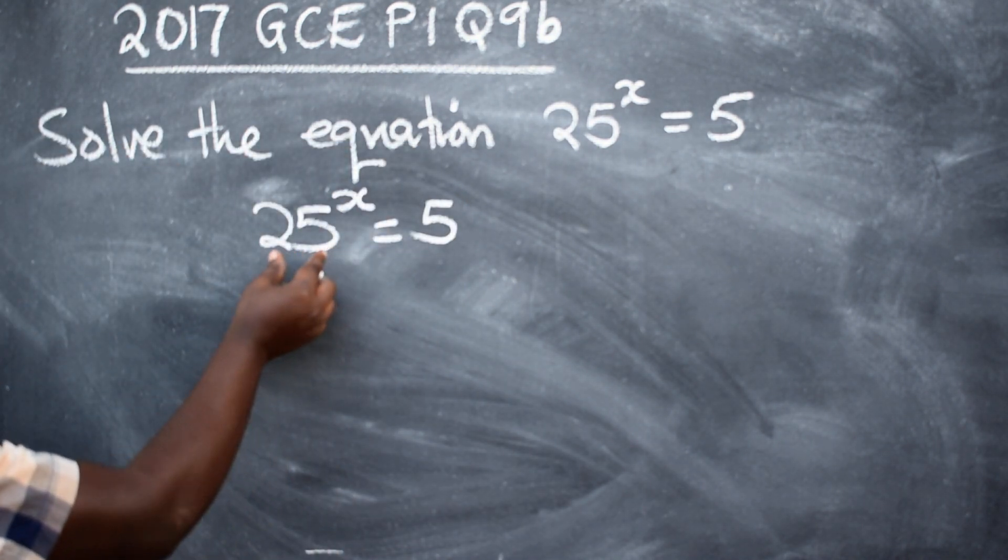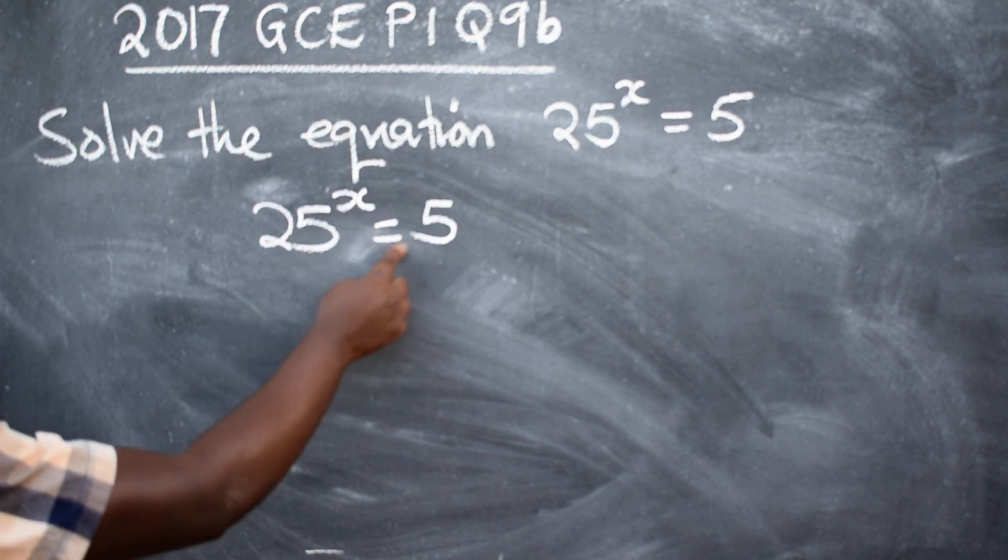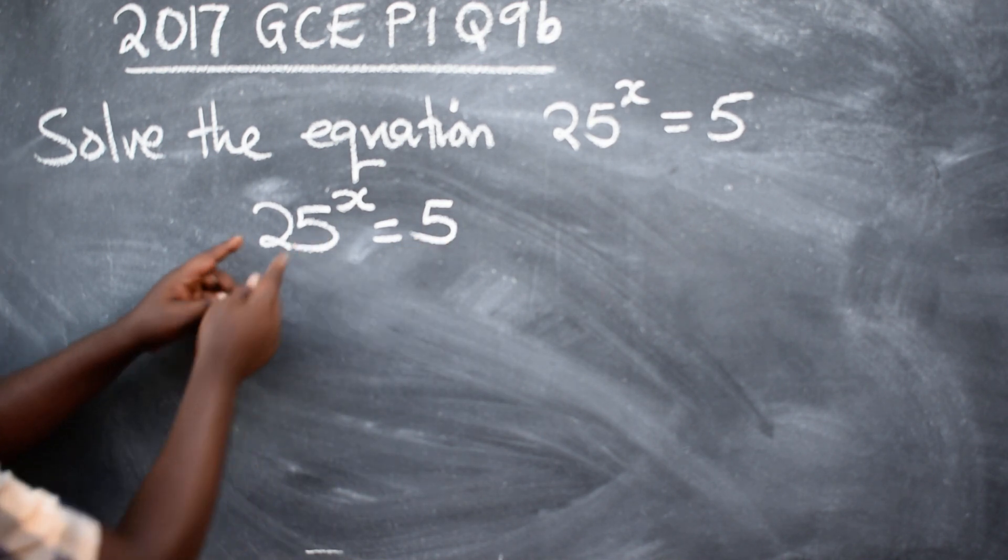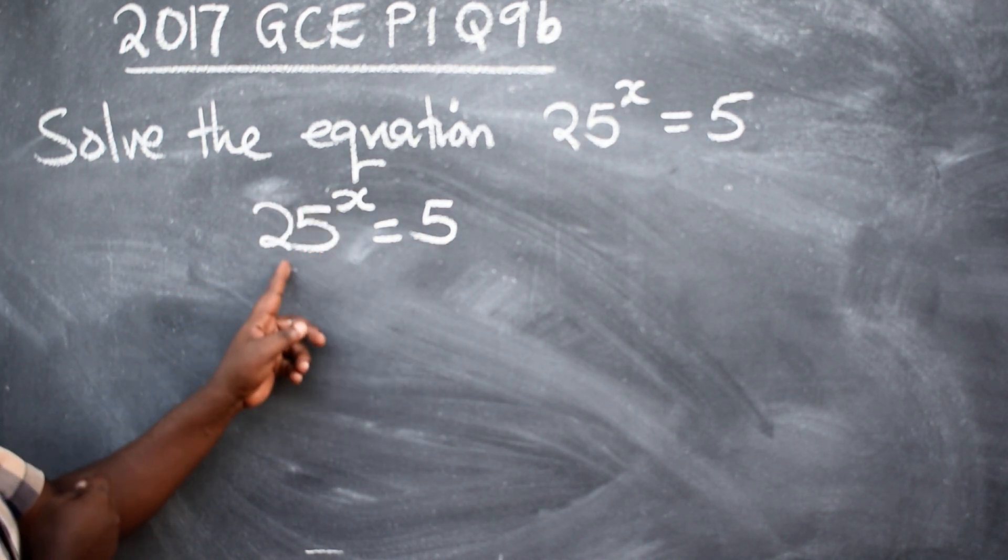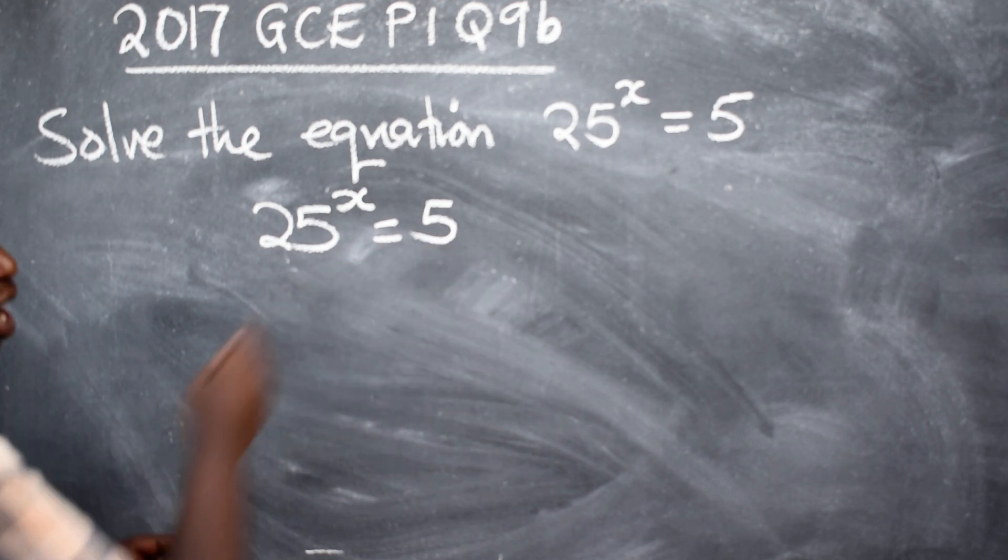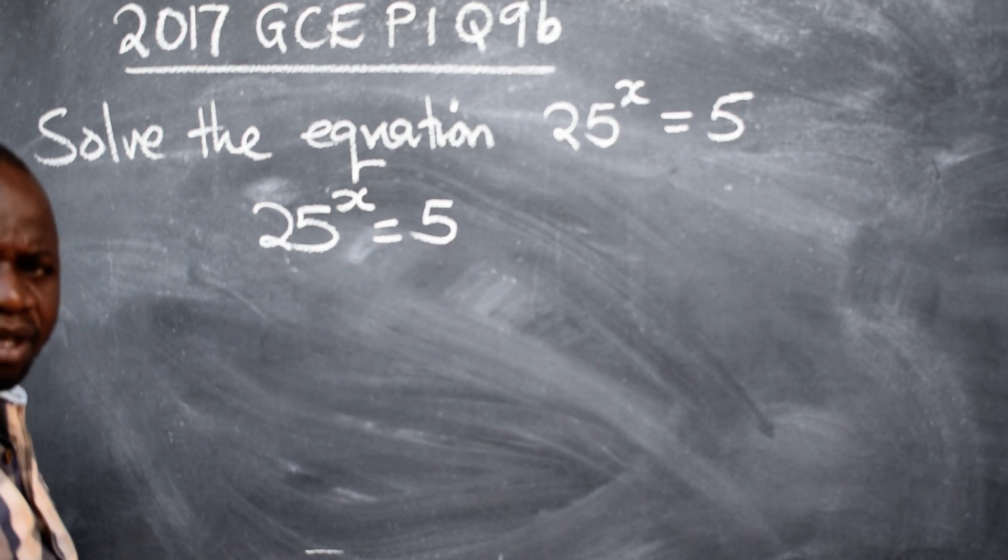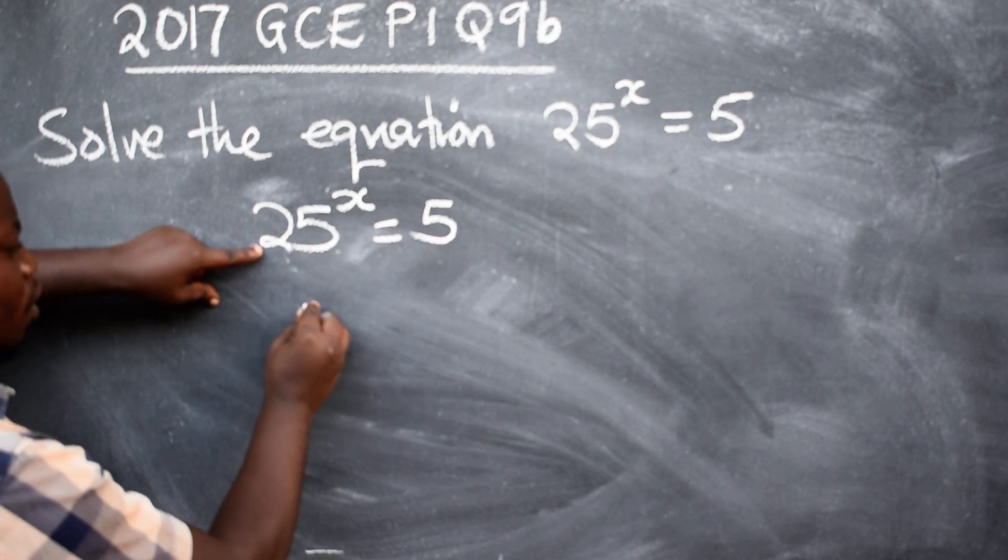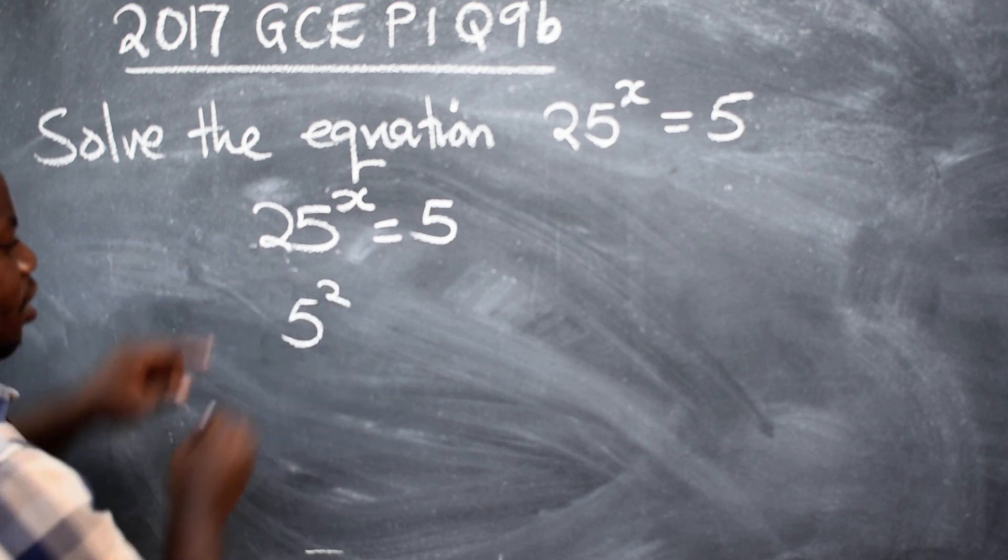Look at this. We have 25 raised to the power x is equal to 5. So, we are going to turn this 25 into 5. How? This 25 can also be written in this form. Do you agree?